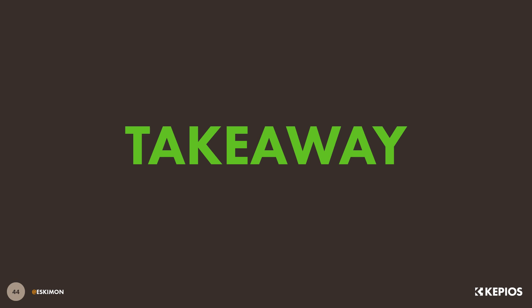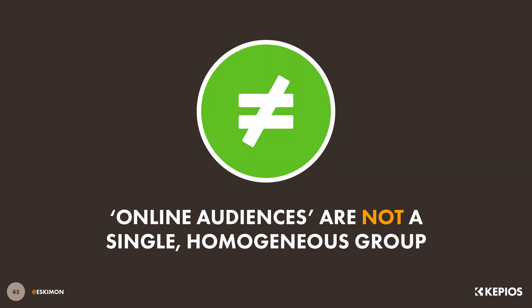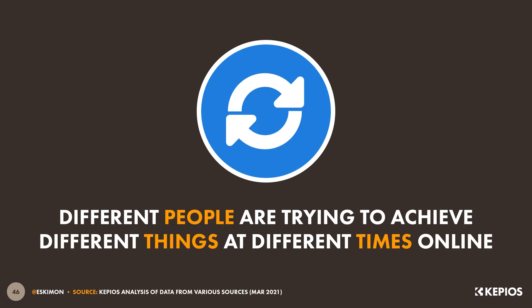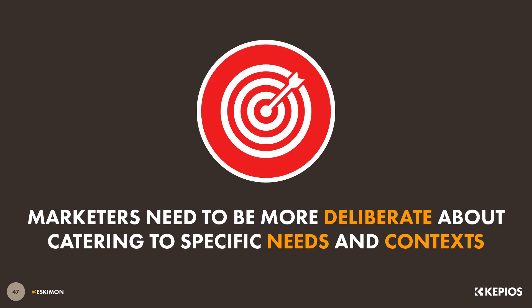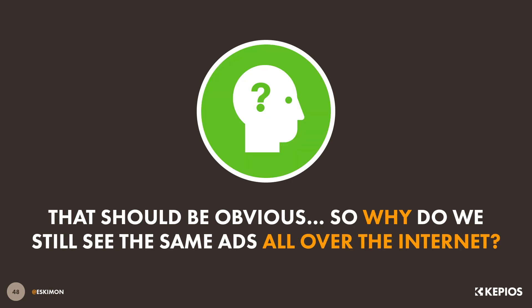The thing I take away from all of this data is that online audiences are not just one big homogeneous group. The data clearly shows that different people are trying to achieve different things at different times, and even the same person will have a variety of different motivations for going online, depending on where they are and what they're trying to do. As a result, marketers need to be much more deliberate when it comes to creating online content and activities that cater to people's specific needs and specific contexts.